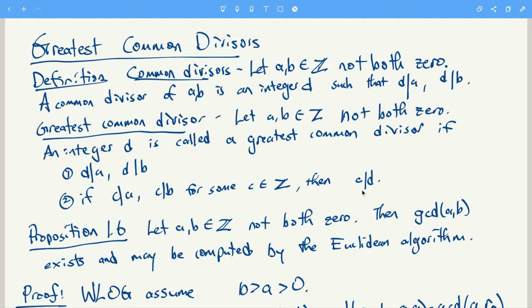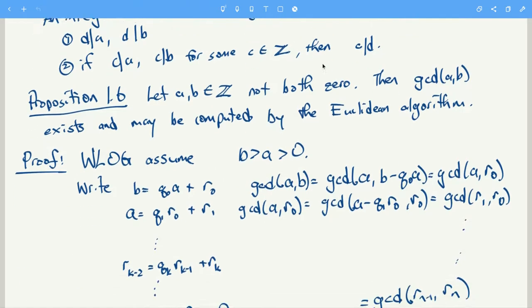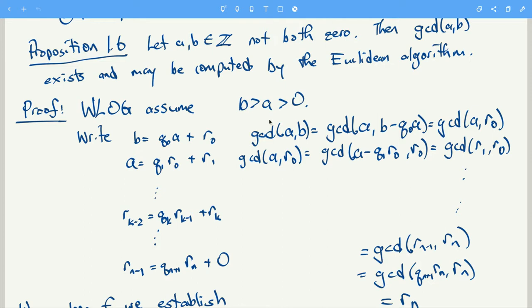That makes sense, but it's not too useful unless these things exist and we can compute them. There's an algorithm to compute the GCD — GCD is an abbreviation for greatest common divisor — and the GCD exists. Without loss of generality, to prove this we'll assume that b is greater than a, which is positive. If b equals a, the GCD of a with a is just a.